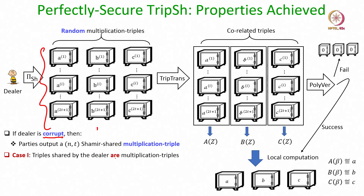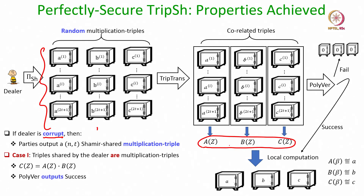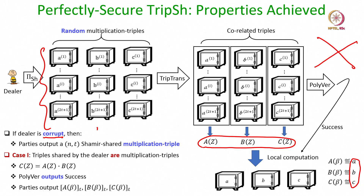If all the triples shared by the dealer are multiplication triples, then the triple transformation protocol guarantees that the C polynomial is the product of the A and B polynomials. As a result, the polynomial verification protocol will output success because there will be no genuine complaints against the dealer. If the output of polynomial verification is success, everyone will output the secret sharing of the values (a, b, c). The triplet (a, b, c) will constitute a multiplication triplet because a is the A polynomial evaluated at beta, b is the B polynomial evaluated at beta, and c is the C polynomial evaluated at beta — and we are in the case where the C polynomial is the product of the A and B polynomials.